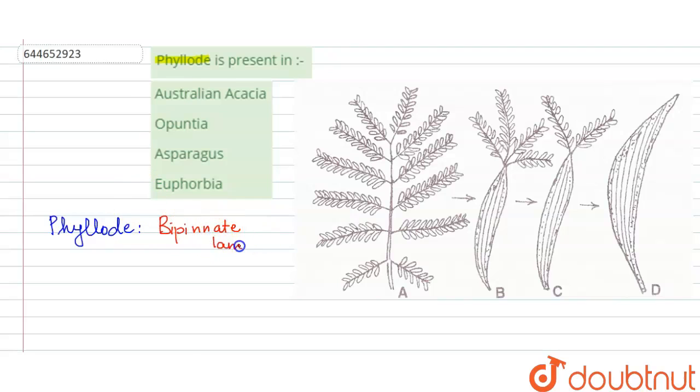And when this bipinnate lamina is absent, instead of it, in place of this bipinnate lamina, what is present in the plant? What we see, the petiole is a structure which is present on the leaves.